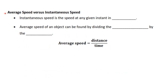Next is average speed versus instantaneous speed. Instantaneous speed is the speed at any given instant in time — for example, looking at the speedometer in a car gives you your instantaneous speed. Average speed can be found by dividing the distance by the time: average speed equals distance divided by time, and the unit is meters per second.